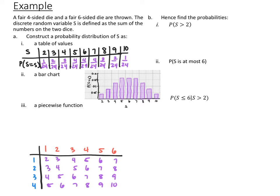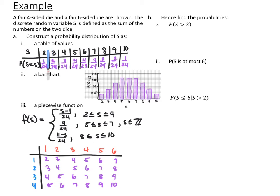Next, we want to write a piecewise function. Unlike the previous example with one function for the whole situation, different parts need different representations. There's a pattern: for S = 2–4, it's (S − 1)/24; for S = 5–7, it's 4/24; and for S = 8–10, it's (11 − S)/24. S must be an integer. This piecewise function represents the entire probability distribution.